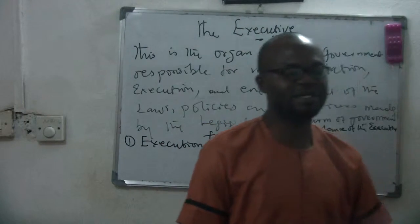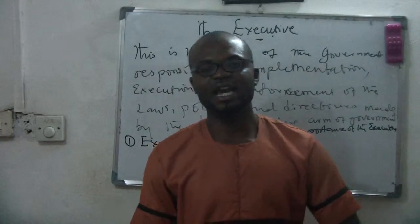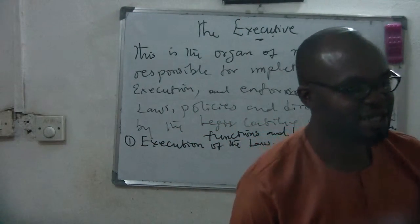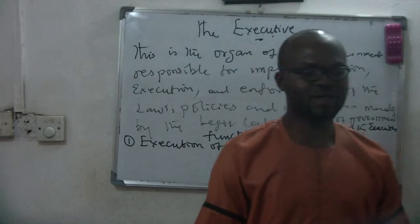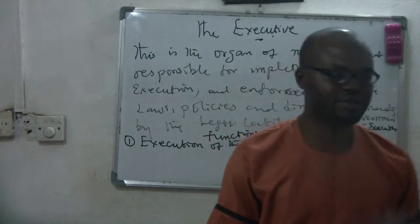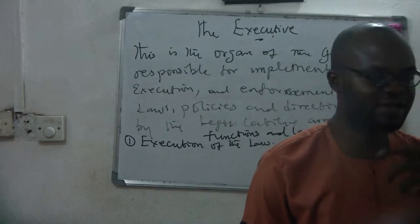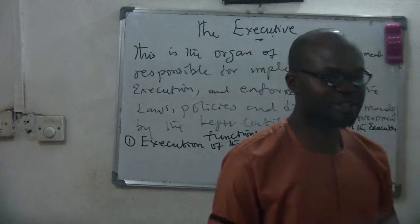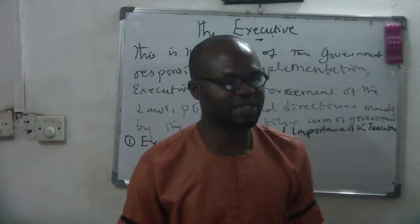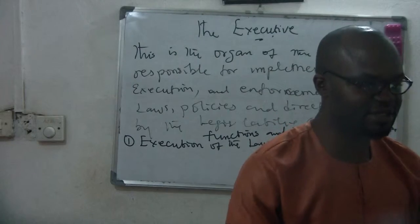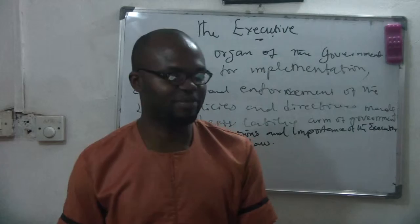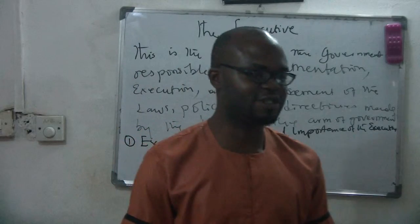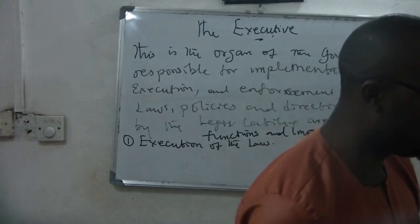If the House of Assembly says that every part of Nigeria should get a certain percent from the oil that Nigerians sell abroad, it is the duty of the executive to get that money and share it. So the executive executes the law, whereas the House of Assembly or the legislature makes the law.